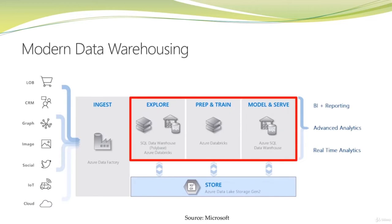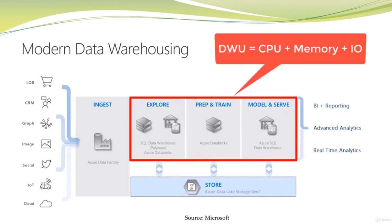The compute power — the data warehousing unit, or DWU — bundles CPU, memory, and IO all into a single unit of compute scale. So you pay in terms of DWU. For example, if you increase from 100 DWU to 500 DWU, you will get billed for that hour at 500 DWU. If on the next hour you bring it back down, you go back to paying for 100 DWU. However, if you have two different values of DWU during one hour, you pay for the highest one during that hour.